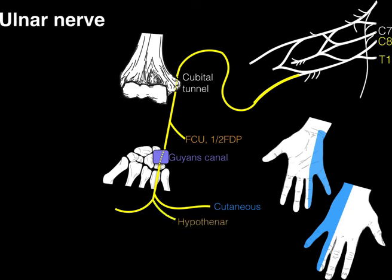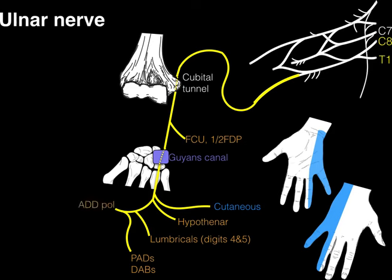The ulnar nerve also gives rise to motor branches that innervate the three hypothenar muscles, branches going to lumbricals three and four acting on digits four and five, as well as the PADs and DABs — PAD standing for palmar interosseous muscles that adduct the digits, and DAB standing for dorsal interosseous muscles that abduct the digits — and also the adductor pollicis muscle. That covers the distribution of the ulnar nerve.